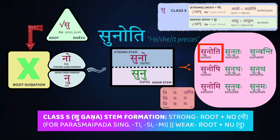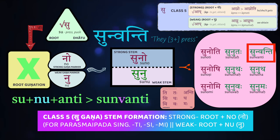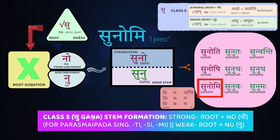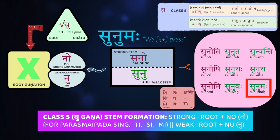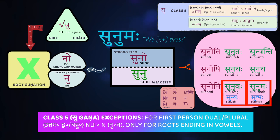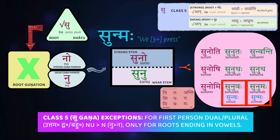So we get su-no-ti (he/she presses), su-nu-taḥa (the two of them press), su-nu-anti (they, plural, press). In the second person, the s-sandhi rule will be triggered by the vowel o, so in the strong forms we get su-no-ṣi (you press). In the first person, aham su-no-mi (I press). The dual is āvam su-nu-vaḥa (we both press), or vayam su-nu-maḥa (we plural press). There are also optional forms for the dual and plural uttama puruṣa — su-nu-vaḥa and su-nu-maḥa — where the short u drops from the gaṇa marker.